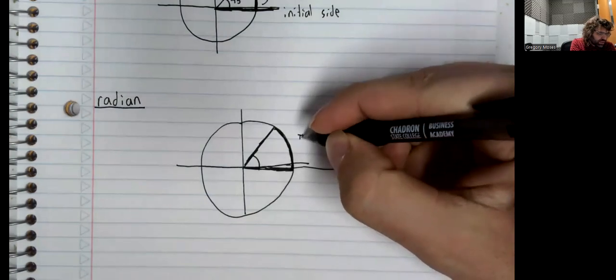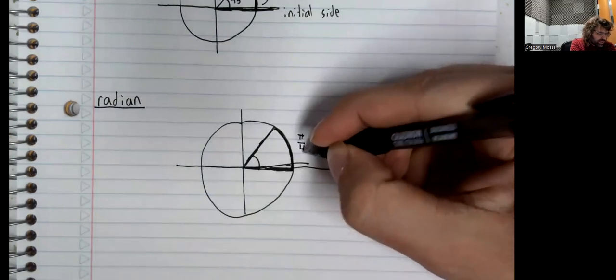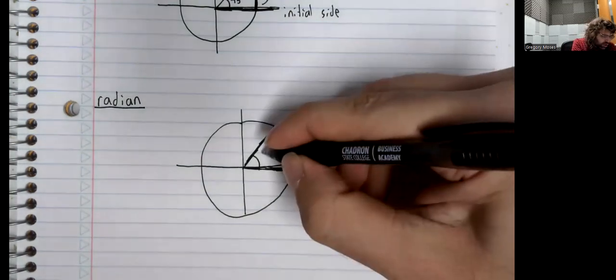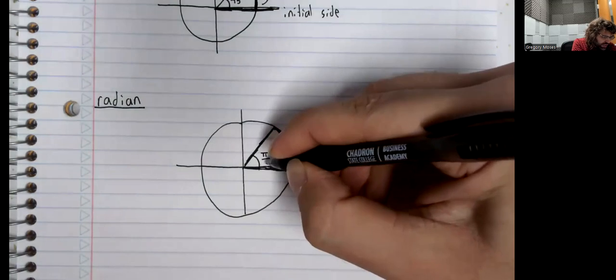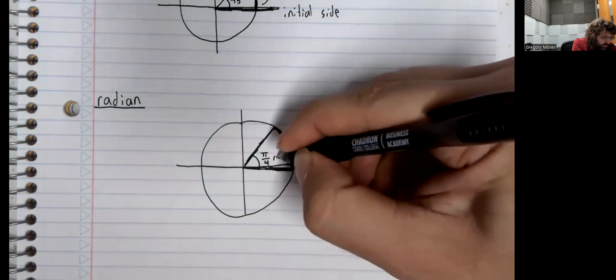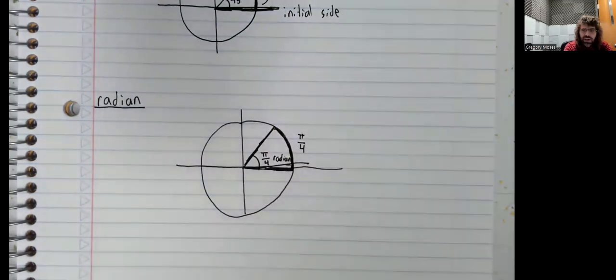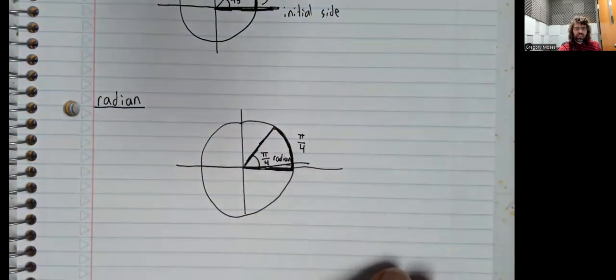So if this arc segment is pi over four units long, this angle is pi over 4 radians.